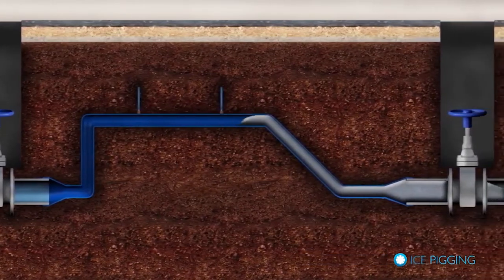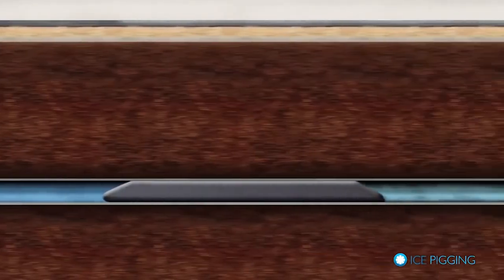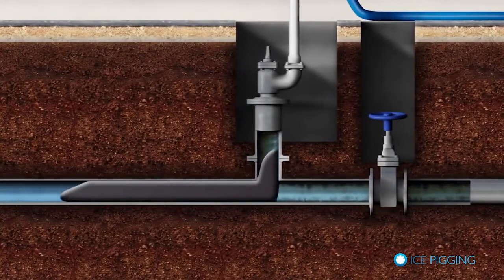It can move around objects and changes in diameter and bends that you may see in a typical pipe network.